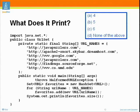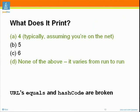This is a clear win for choice C, six. Let's see what this program actually does. As a practical matter, it does print four — if you run this and you're connected to the net. If you look in the specification, the answer is it varies from run to run. As for the intuition — how is that possible? URLs' equals and hashCode methods are completely screwed up. It's as simple as that.